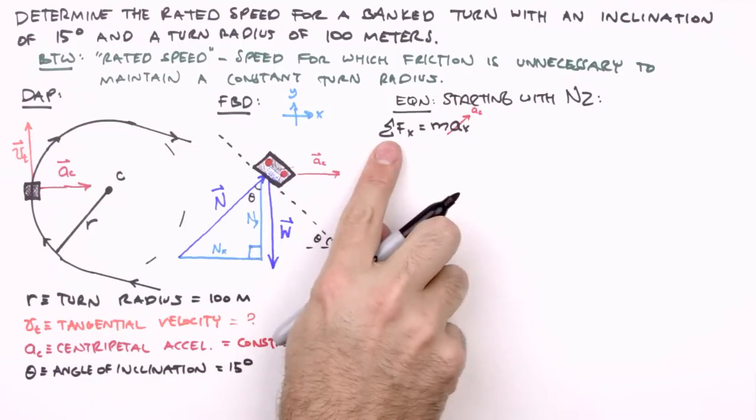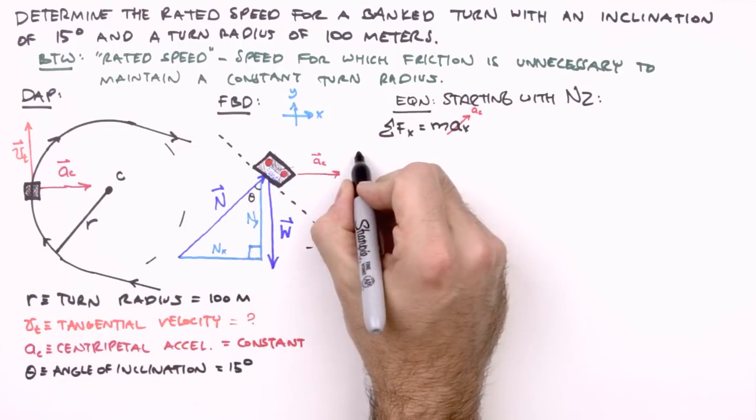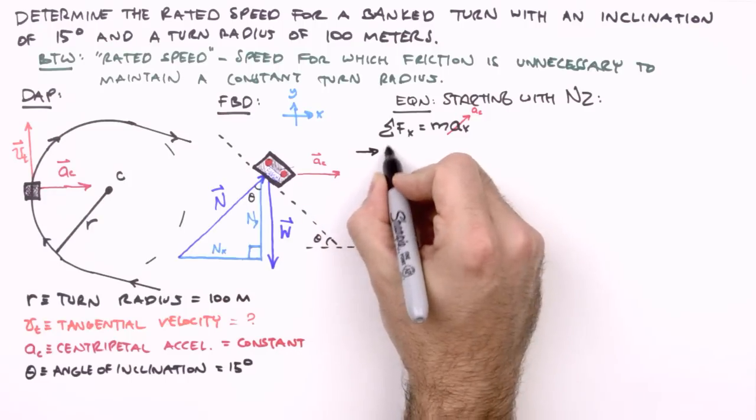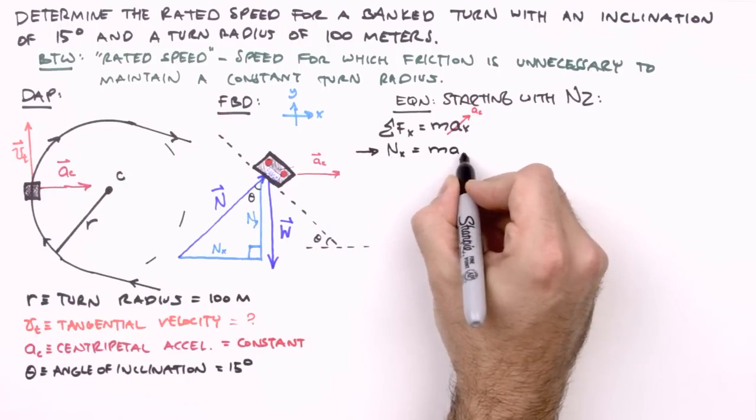Summing our forces in the x-direction, we have just n sub x, the normal force in the x-direction. So we write n sub x equals m a sub c.